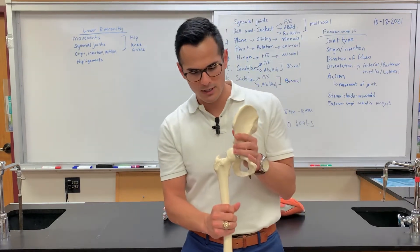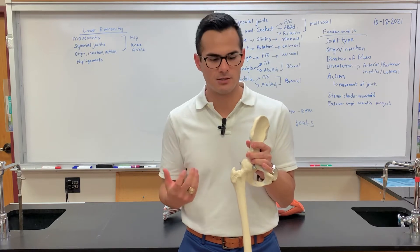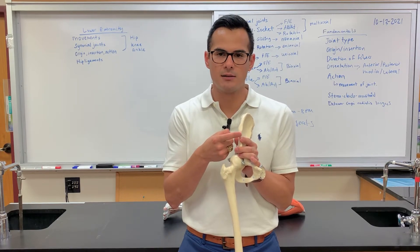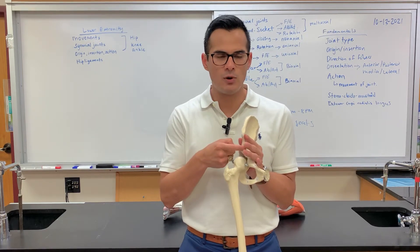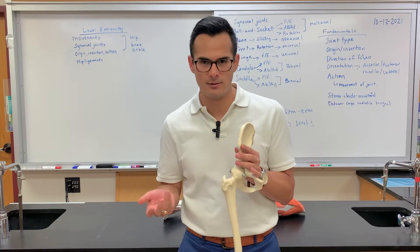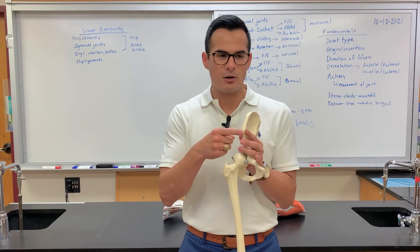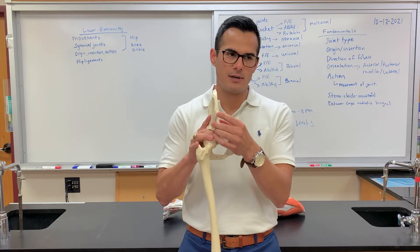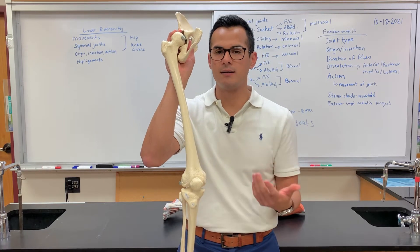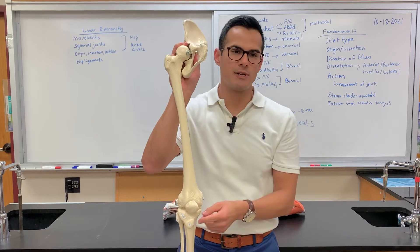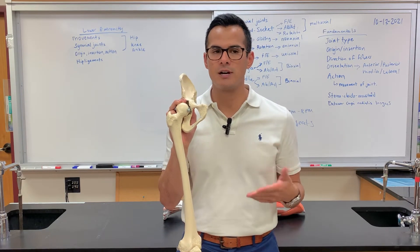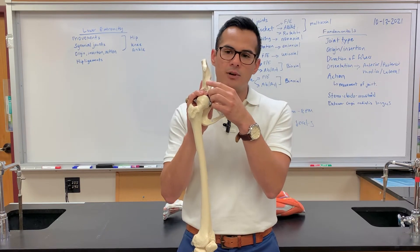Starting with the hip flexors. This bony landmark is the anterior superior iliac spine — the ASIS. The landmark below it is the AIIS, the anterior inferior iliac spine. The muscle that starts at the ASIS and travels all the way down to the proximal medial tibia is the sartorius — it's kind of shaped like an S. You also have one of the four quad muscles, the rectus femoris, which originates at the AIIS.